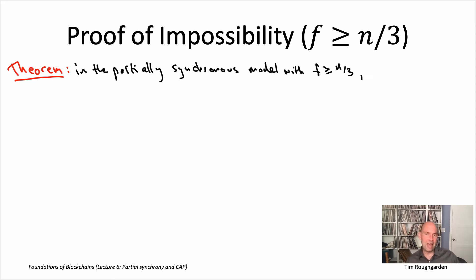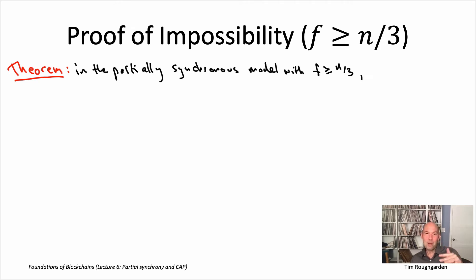After we switch to the synchronous phase after GST, we would like to have both safety and liveness. We'd also like to give up as little as possible in the asynchronous phase. The traditional consensus goal is to retain safety but give up on liveness during that asynchronous phase. In the context of Byzantine agreement, this means we want a protocol that satisfies the agreement property always — it's always the case that all honest nodes output exactly the same thing. We want validity and termination to hold eventually, after the global stabilization time, so eventually they will halt, possibly after GST, and if they all started with the same input, they should all be outputting the same output.